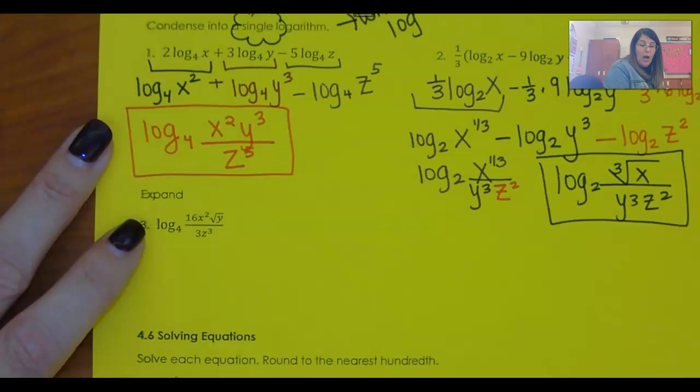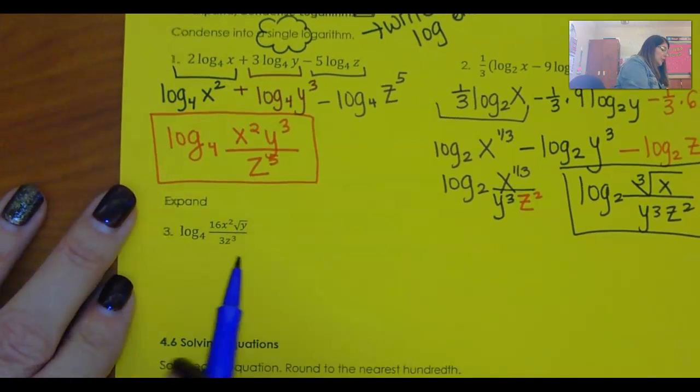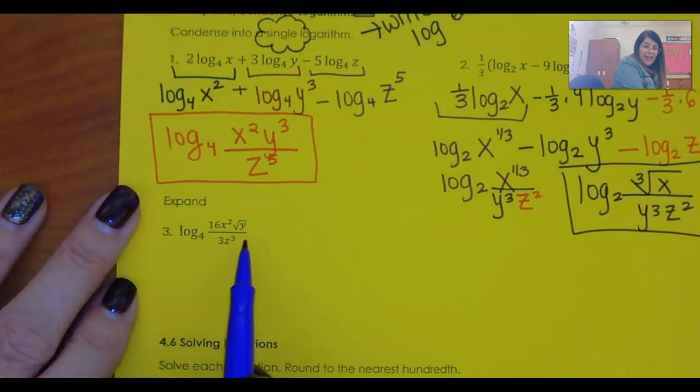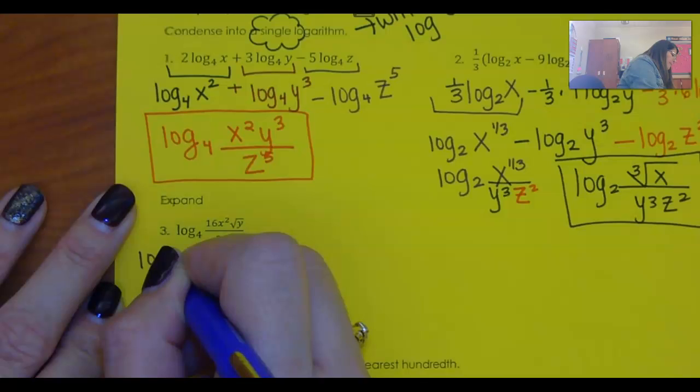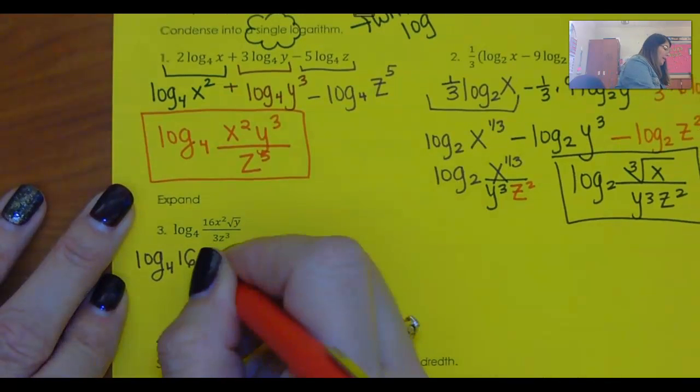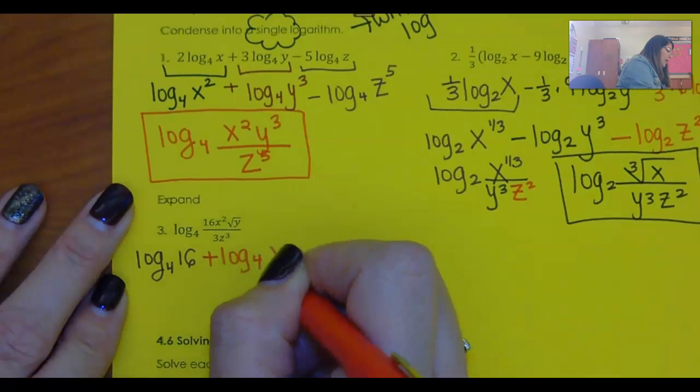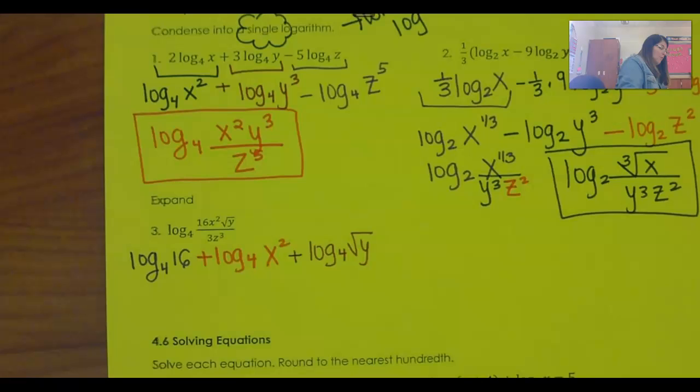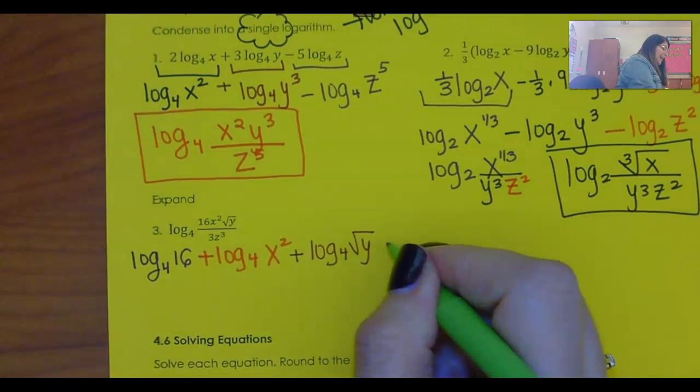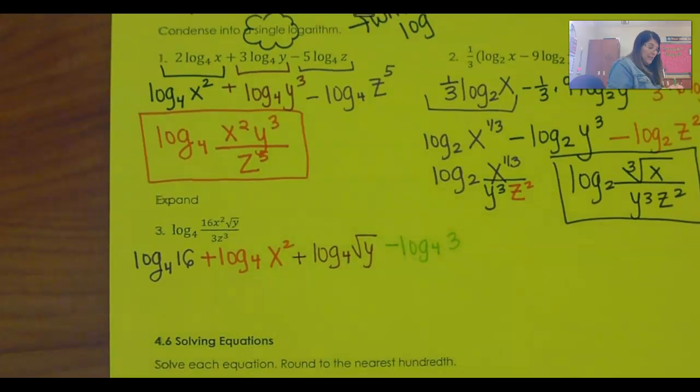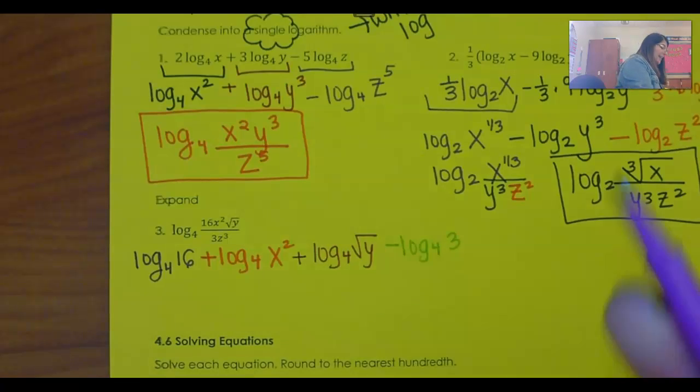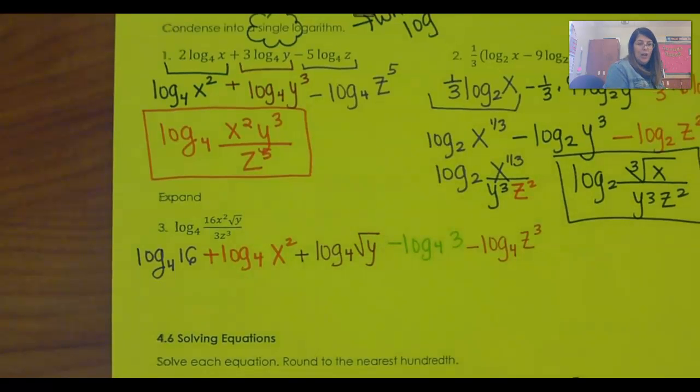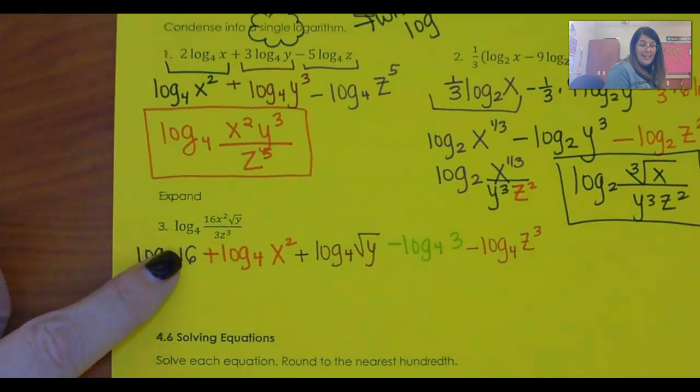Now I have to expand, so I'm going to put a log base 4 with each of these things. So for starters, I'm going to take everything that is multiplied, and I'm going to add them, and then I'm going to take everything that is divided, and I'm going to subtract them. So I will say the log base 4 of x squared, which by the way, will simplify, plus the log base 4 of the square root of y, minus the log base 4 of 3, because that goes in the denominator, right? And then minus the log base 4 of z cubed. Okay, a couple things here. First of all, 16 is 4 squared, right?